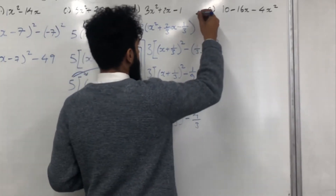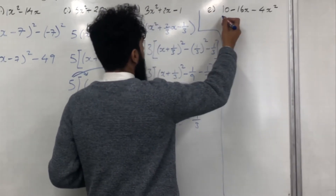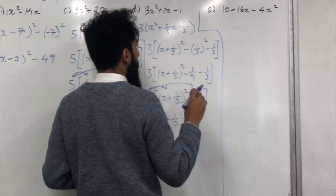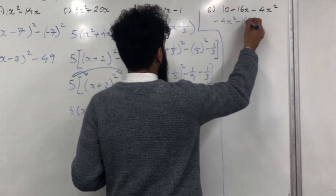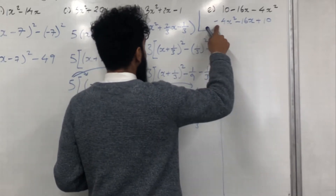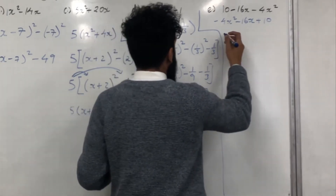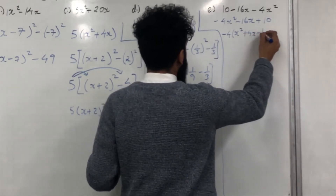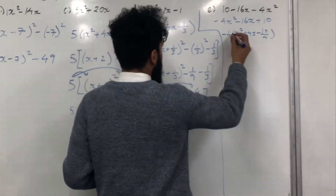Moving on to Part E. We want to complete the square on this quadratic. First, I'll rewrite it in the form ax² + bx + c, giving −4x² − 16x + 10. The first step is to check the coefficient of x squared — in this case it is minus 4 — so we need to first factorize. We take out the minus 4, giving −4(x² + 4x − 10/4). The coefficient of x squared inside the bracket is 1, so we can proceed forward.